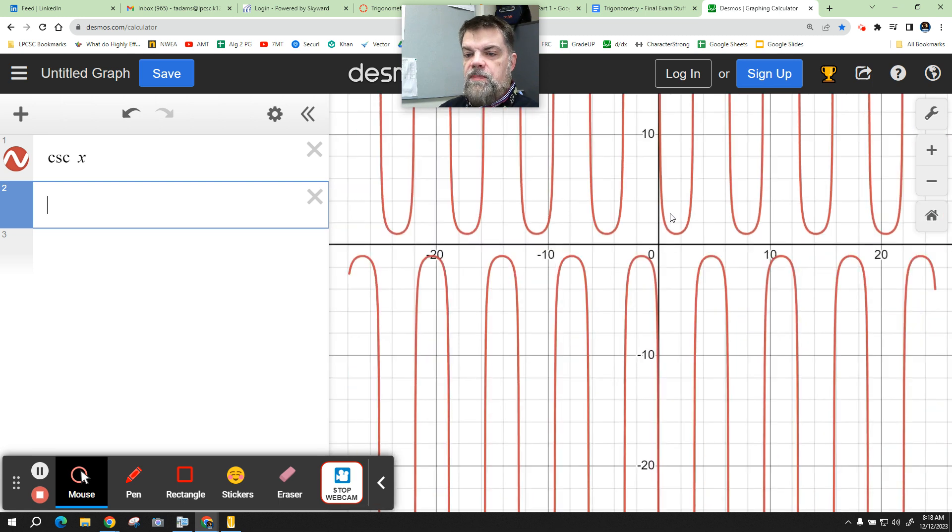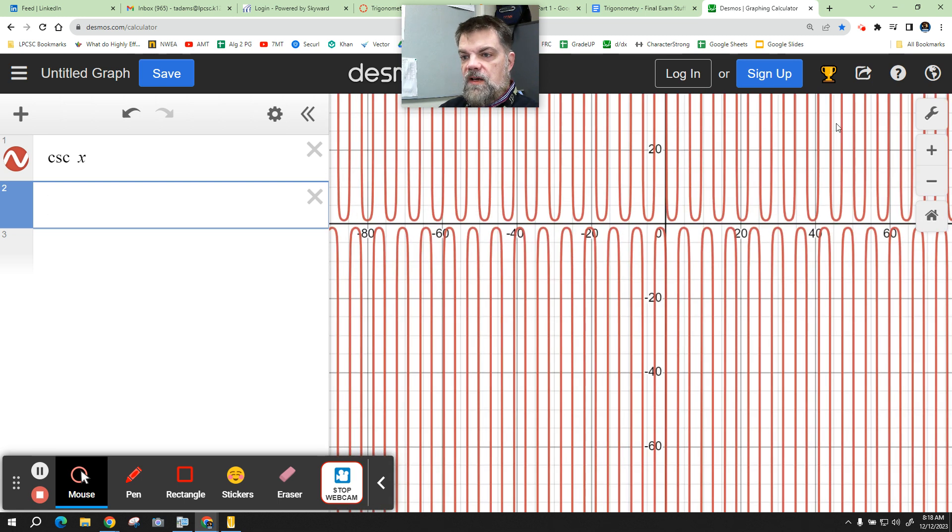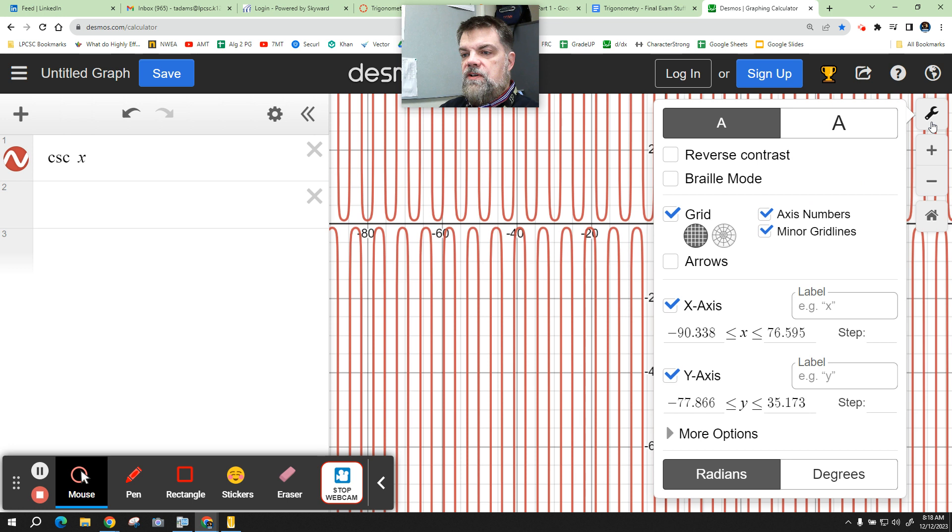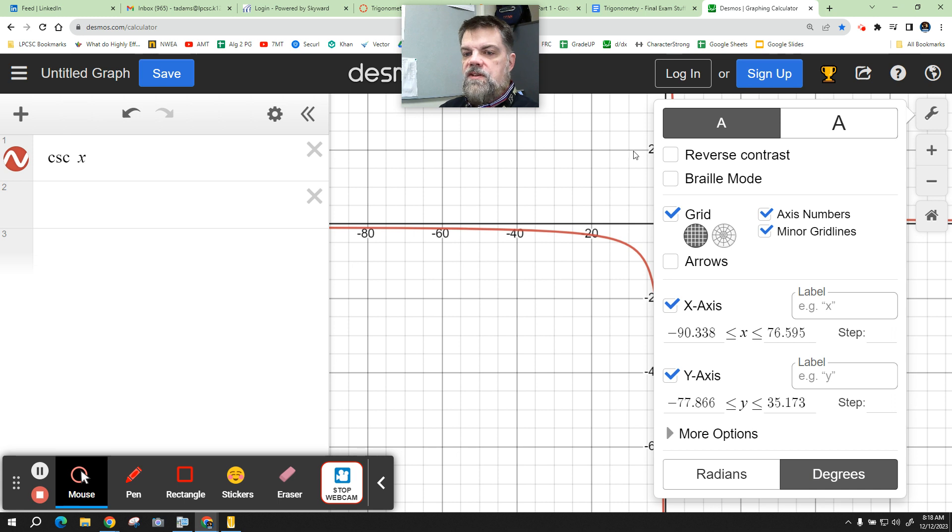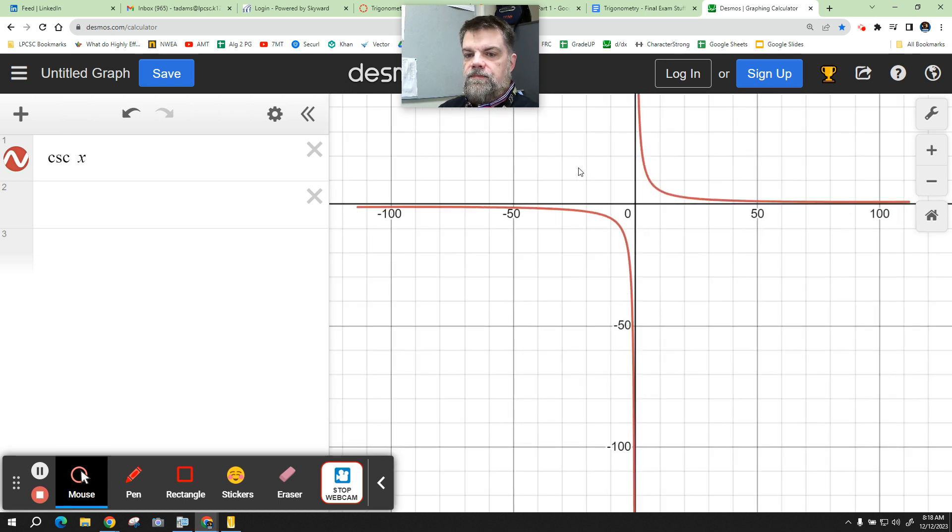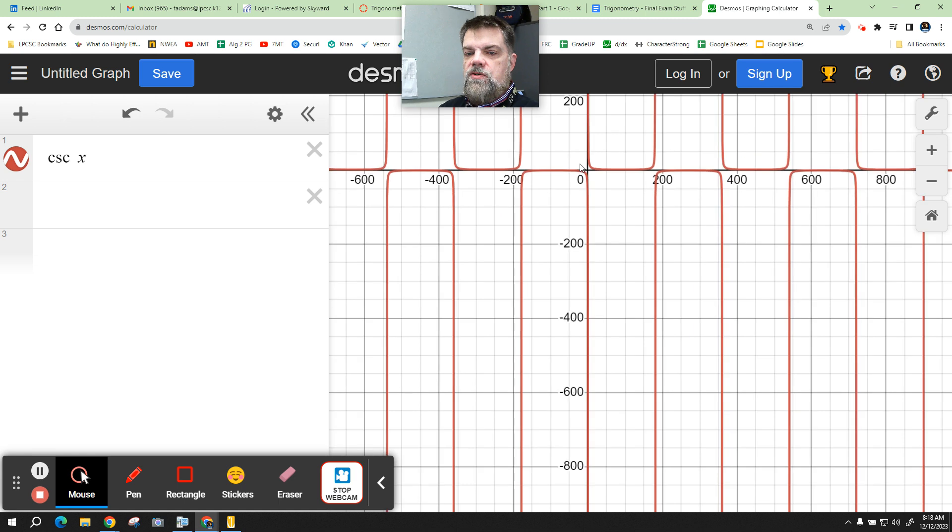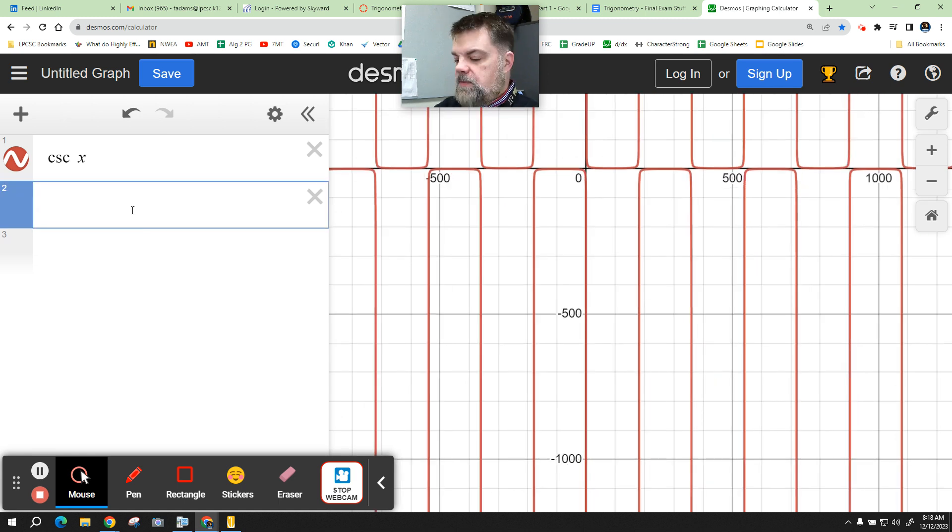Now this is the tricky part. It has to be in degrees. So I have to go into my calculator and I have to make sure I'm in degrees. Alright? Now I'm in degrees. When I zoom out, I'm going to say Y equals 150.